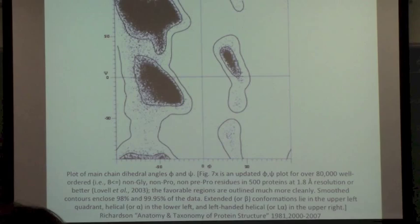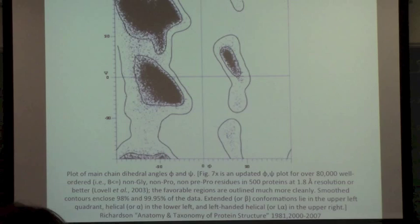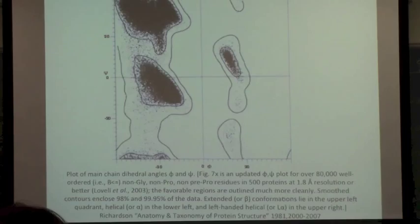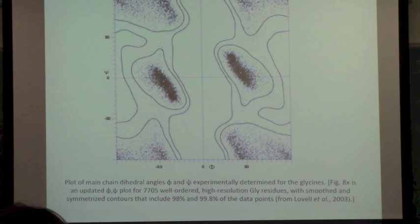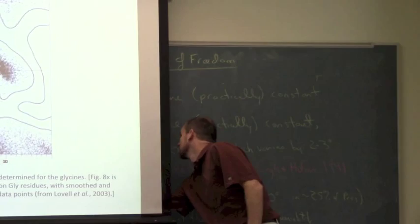They're a little bit different because it turns out things are a little bit squishy, and the bond angles can vary a little bit, and the bond distances can vary a little bit, and the chemistry of the side chains also matter. So the experiment's a little different than the original calculation. This is a plot for glycine residues. What's different about this plot?